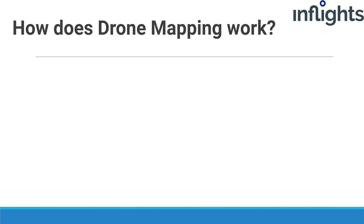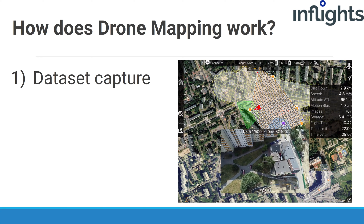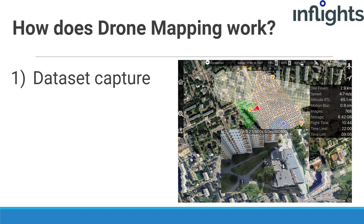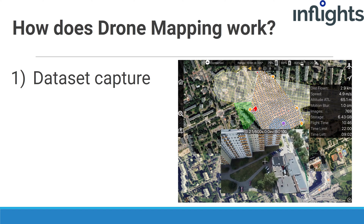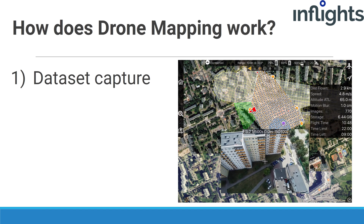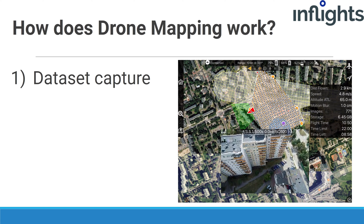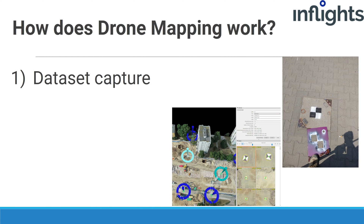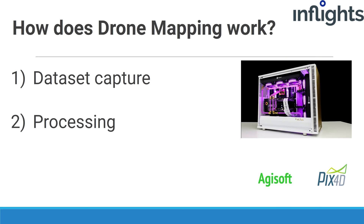How does drone mapping work? There are three main steps in every photogrammetry project. First, we capture the dataset that contains hundreds or even tens of thousands of images, depending on the project size. To do this we use a drone equipped with a camera. Additionally, we use ground control points to geo-reference the project in an accurate way. Then the dataset is processed in photogrammetry software to create various products like orthomosaic,